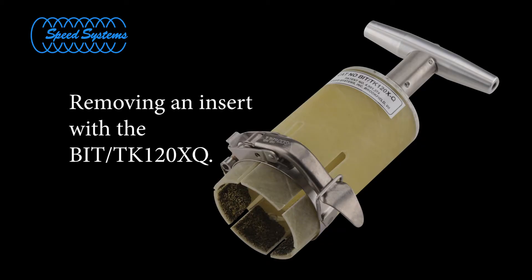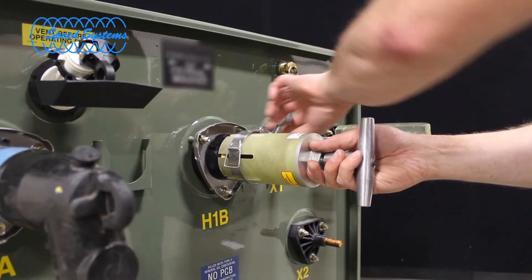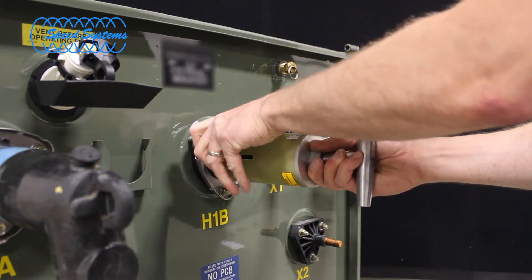The BIT-TK120XQ may also be used to remove a bushing insert from the bushing well. Open the quick clamp lever to allow the insert to slide into the tool.